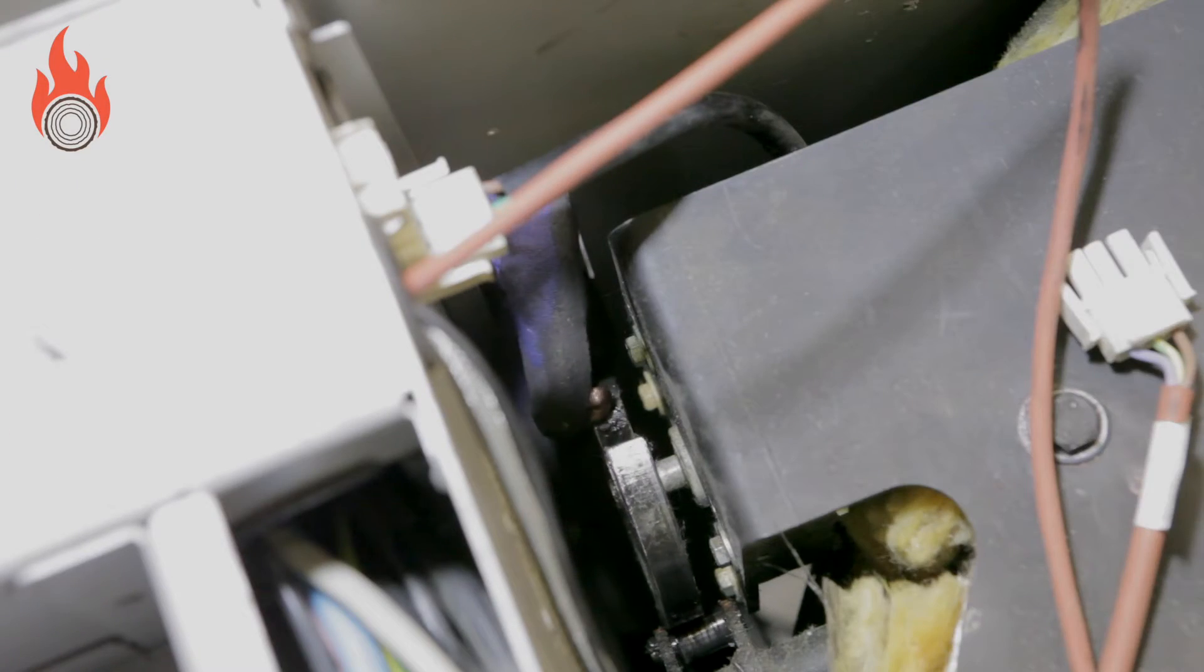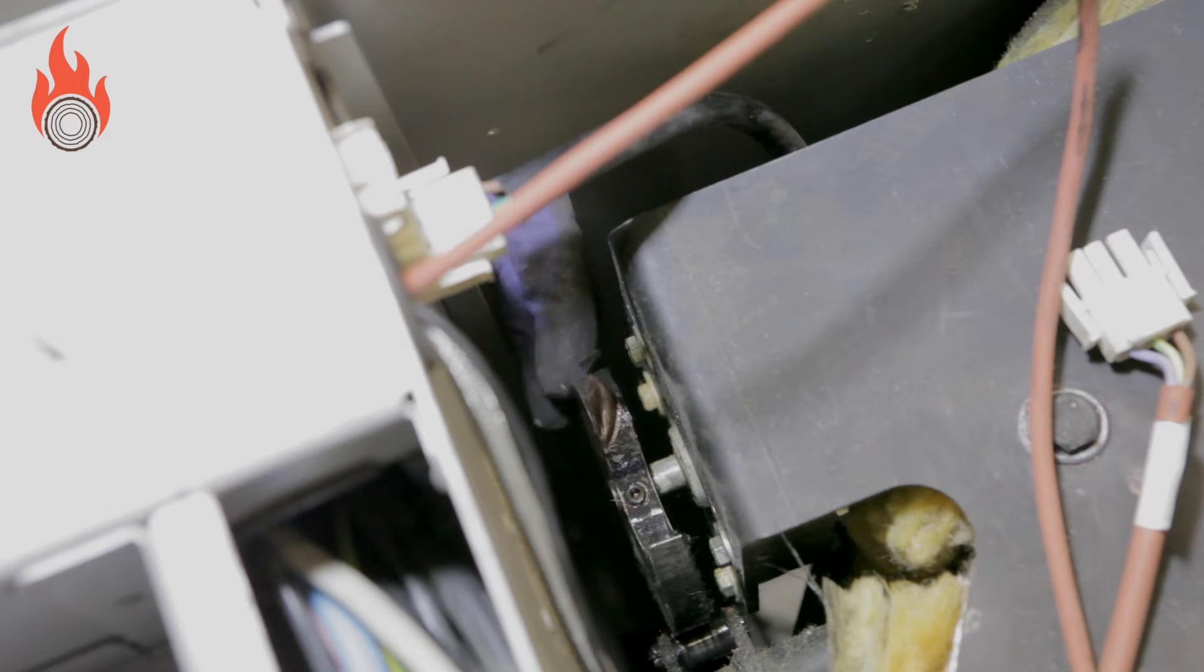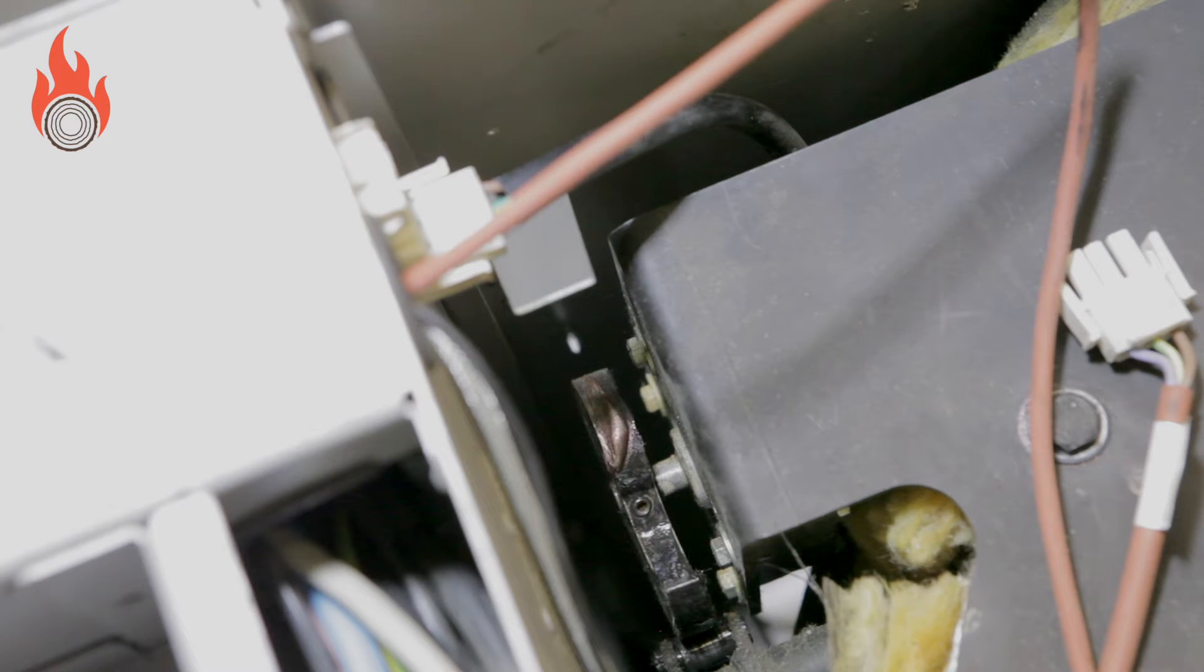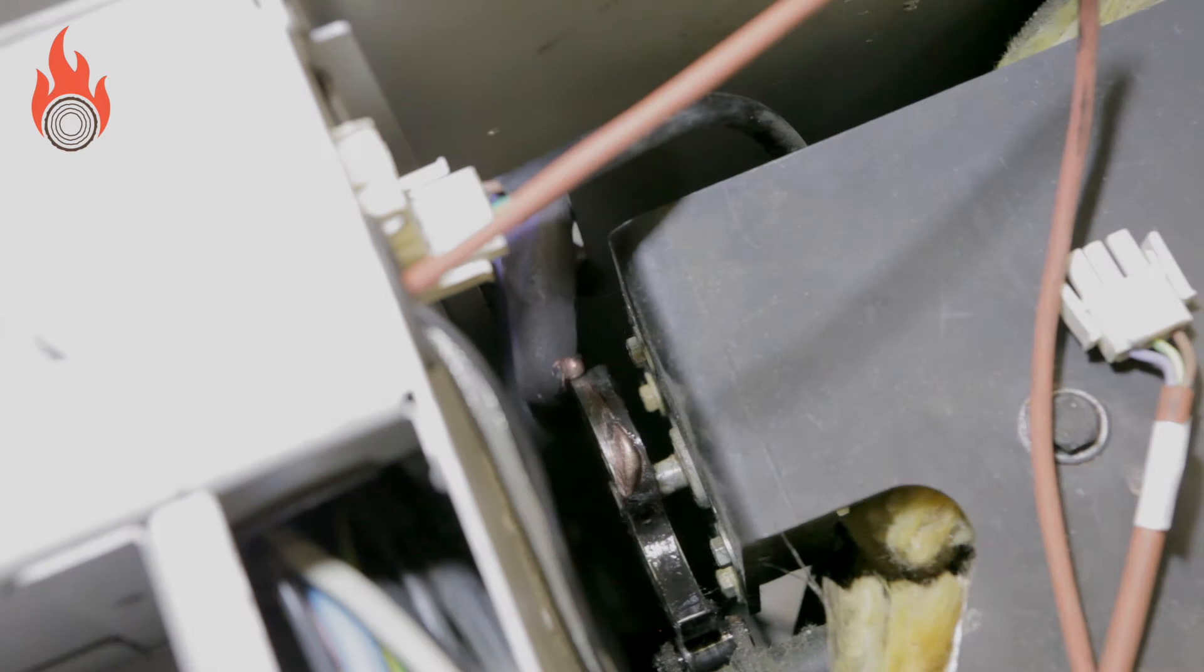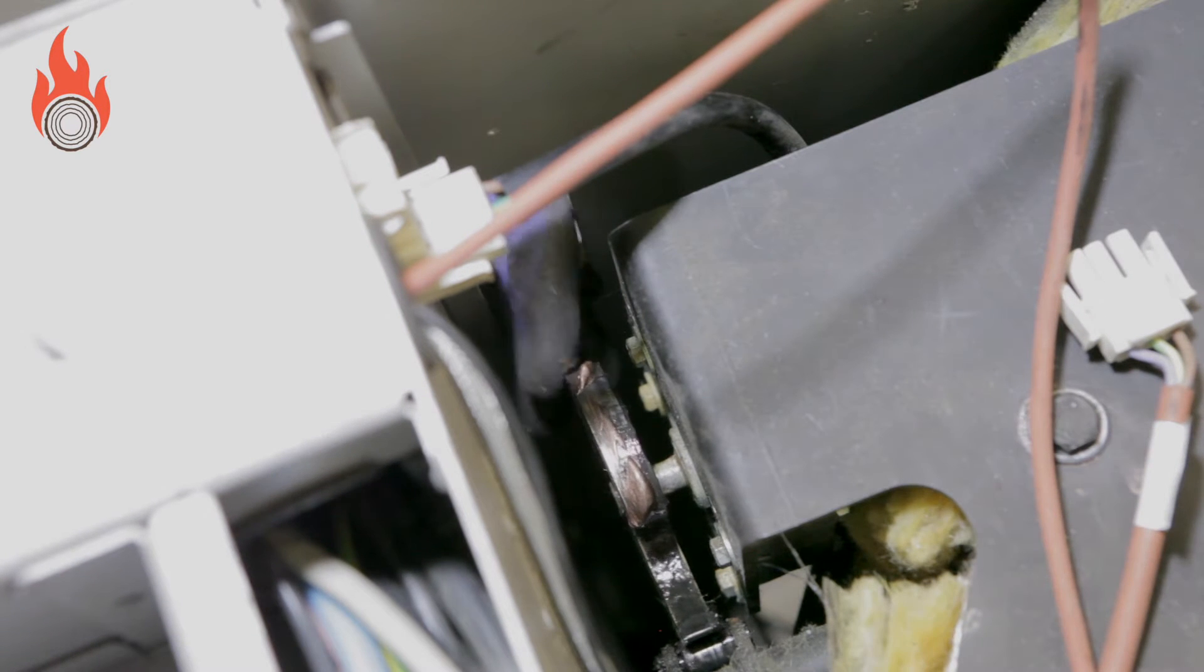Lubricate the eccentric plate with copper paste. Make sure that the copper paste remains during operation. The eccentric plate must run freely. Finally test the operation again and then replace the top cover.